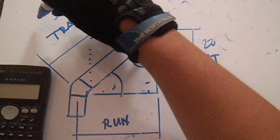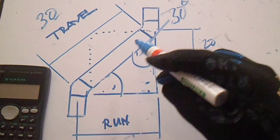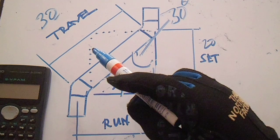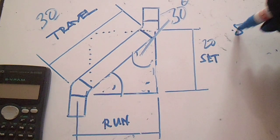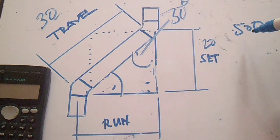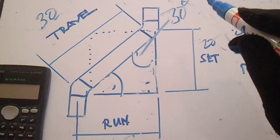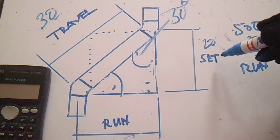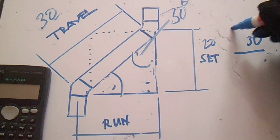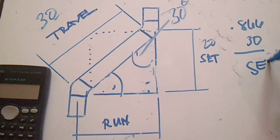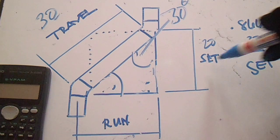Now if the given is travel of 30 at 30 degrees, to find this run multiply travel by 0.500. So 0.500 multiplied by 30 equals run. To find this set, multiply travel by 0.866 to get set — with the same degree and given travel.